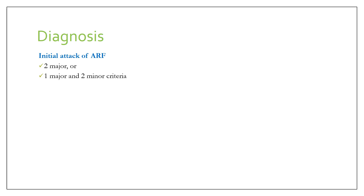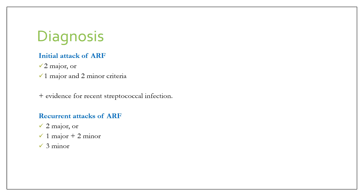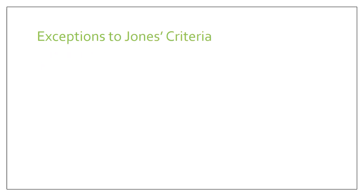The diagnosis of the first attack of acute rheumatic fever should be confirmed if there are two major, or one major and two minor criteria, along with evidence of recent streptococcal infection. For the diagnosis of recurrent attacks, you need two major, or one major plus two minor, or three minor criteria, plus evidence of recent streptococcal infection. This is very important and is often asked in the exam, especially in long cases.